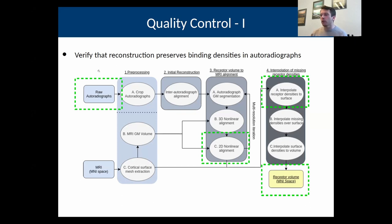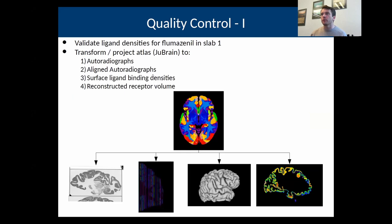To do that, I used an atlas, the uBrain atlas, and then transformed it into the space of the autoradiographs, into the space of the aligned receptors, the aligned autoradiographs, into the surface space, and onto the reconstructed volume. That way we can check for each region what is the average amount of receptor binding density in each of those regions.